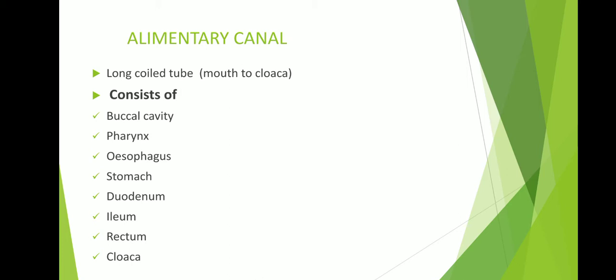The alimentary canal is a very long and coiled tube-like structure. It starts from the mouth and ends with the cloaca. It consists of buccal cavity, pharynx, esophagus, stomach, duodenum, ileum, rectum, and cloaca. It has two ends — the anterior end starts with the mouth, and the posterior side ends with the cloaca.